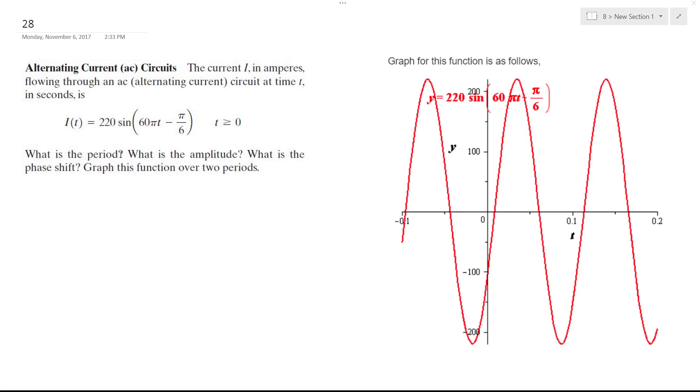All right, solving this problem. So we want to find amplitude, period, and then the phase shift. All right, so for these, amplitude is just going to be 220. It's the coefficient in front of the trig function.